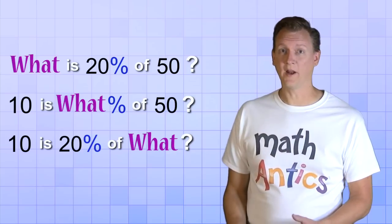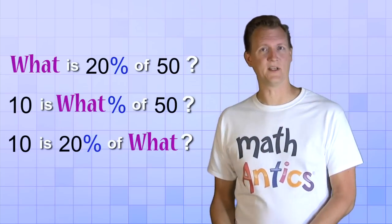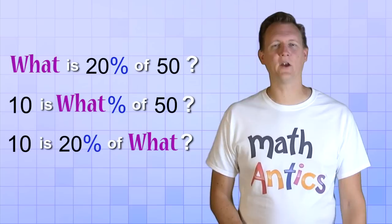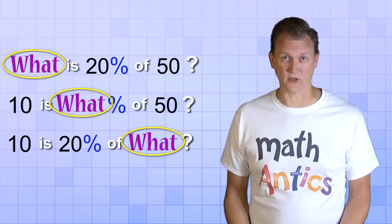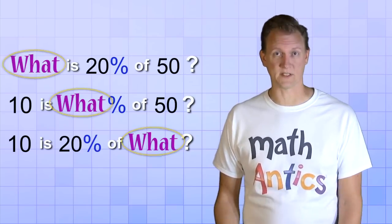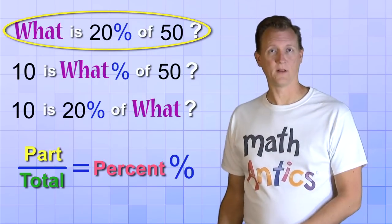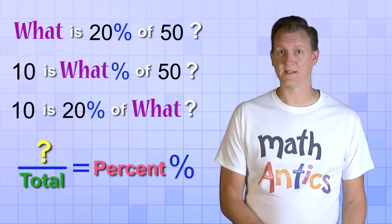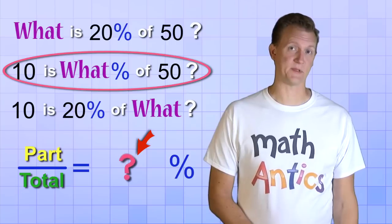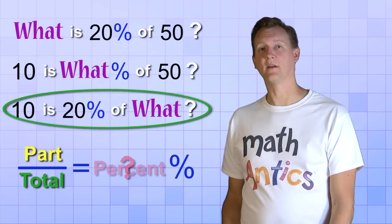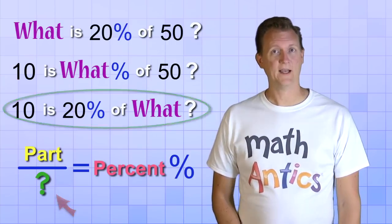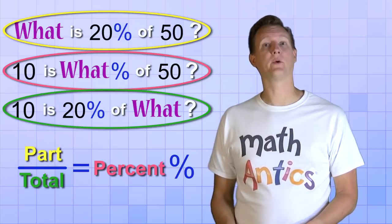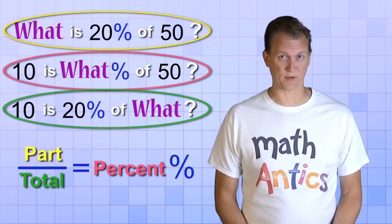Doing this is helpful because whenever you're given a problem involving percents, the first thing you need to figure out is what the problem is asking you to find. You know, which number is missing? In the first statement, the part we have is missing. In the second statement, the percent is missing. And in the third statement, the total is missing. And these three statements represent the three most common types of percentage problems.